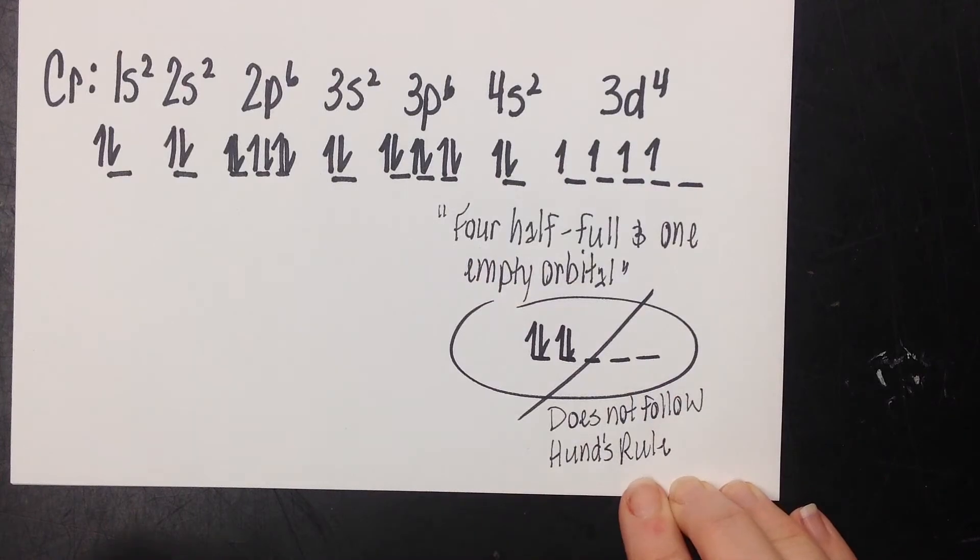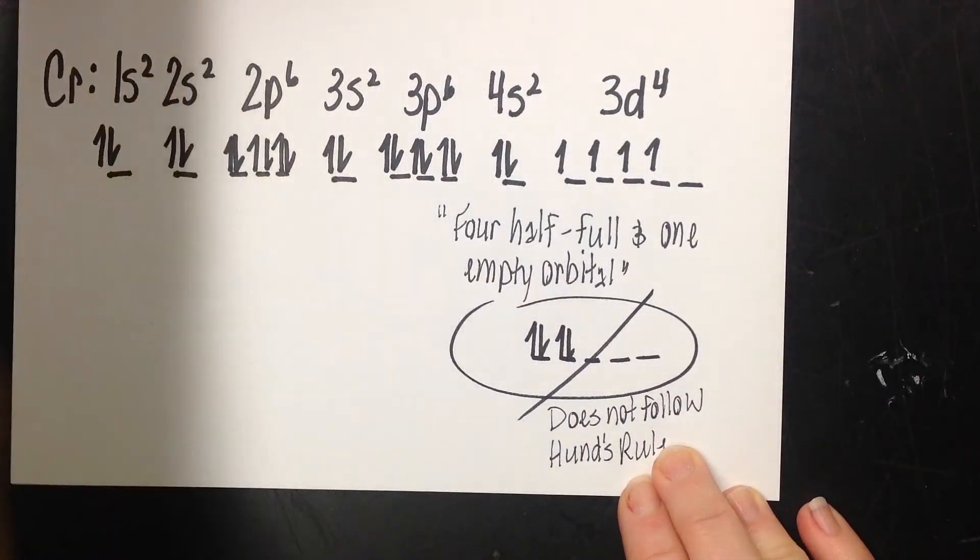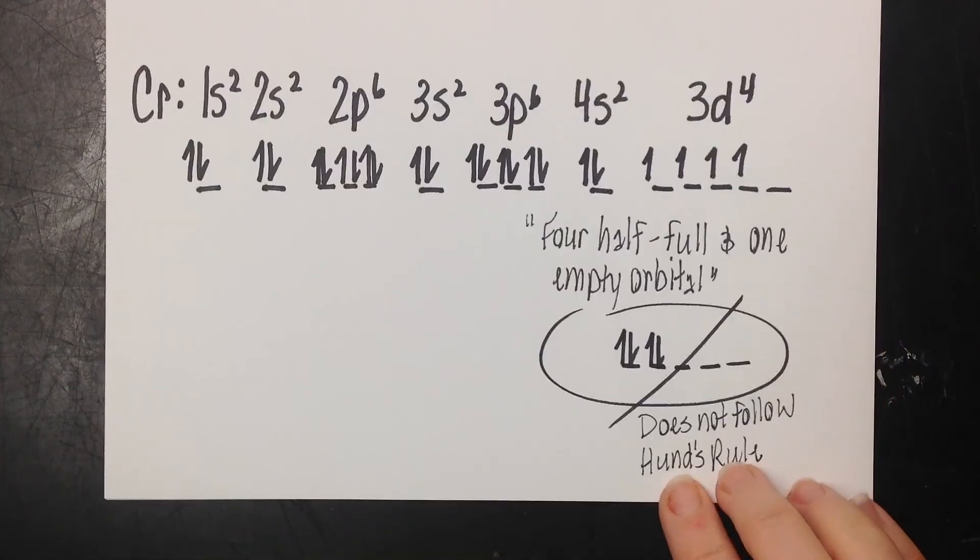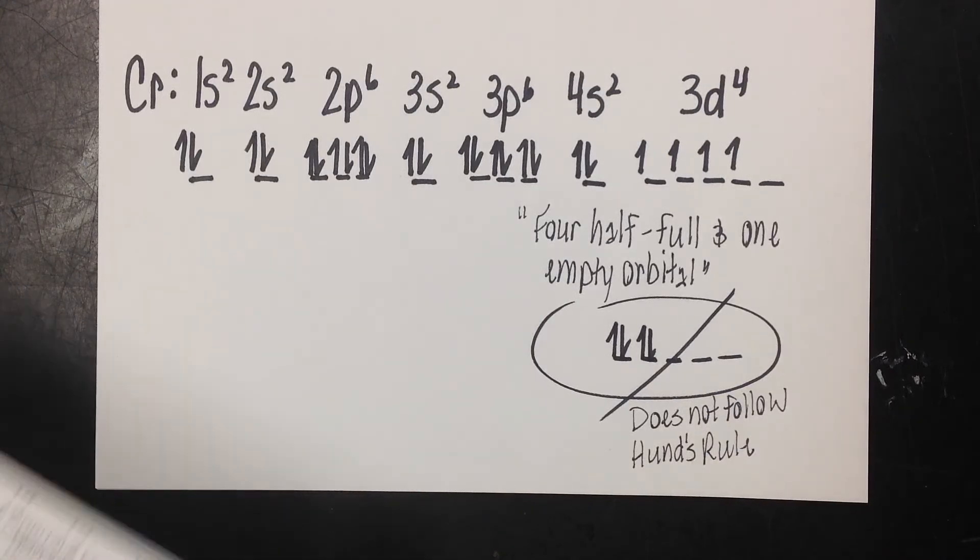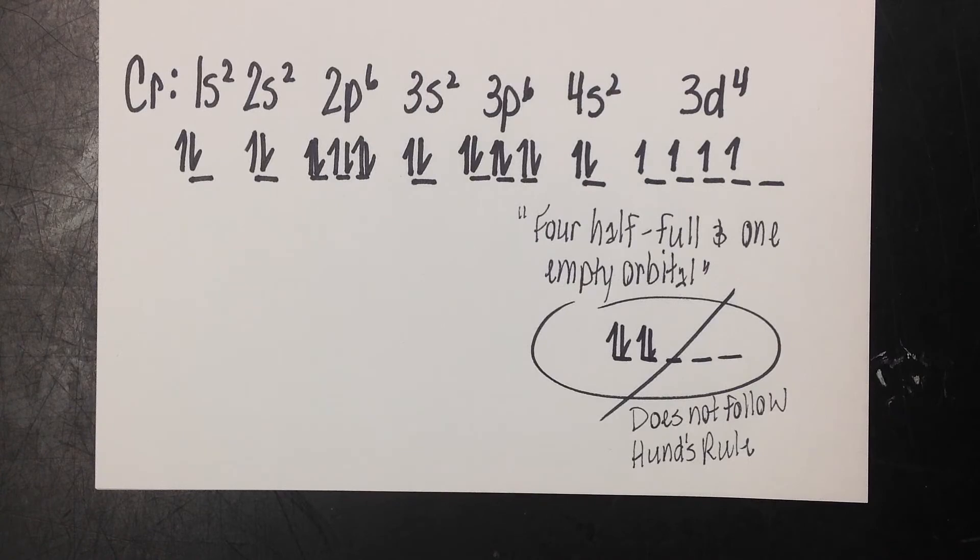So as you can see, orbital notation is really easy. Once you know electron configuration, you know all of the basics. So this is just adding a little extra information to what we already know.